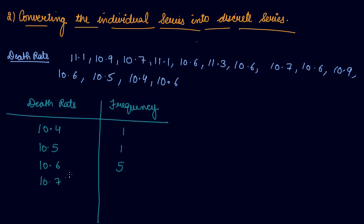10.7 comes in the series 2 times, so the frequency is 2. Then 10.9, the frequency is again 2 because it comes 2 times. Then 11.1, the frequency is 2 because it comes 2 times. Then comes 11.3. It comes once in the series, so the frequency is 1.